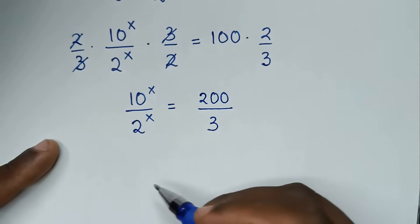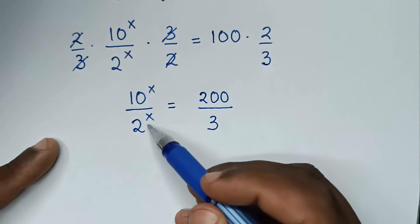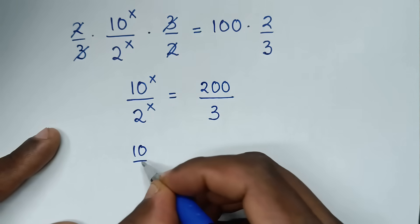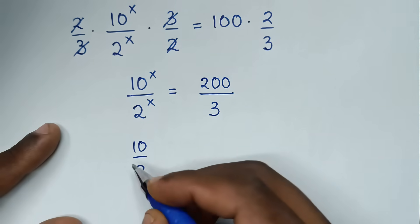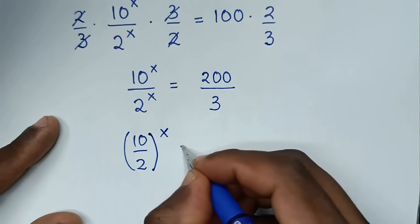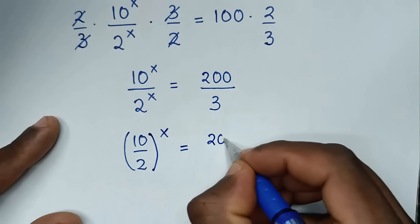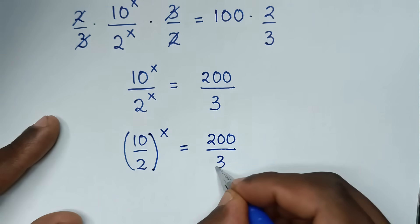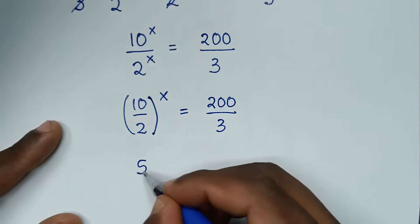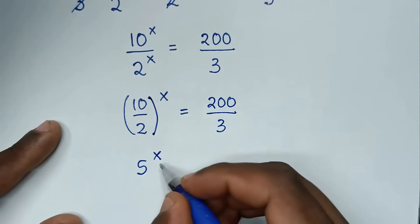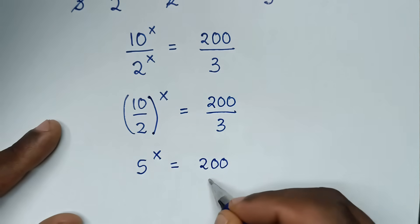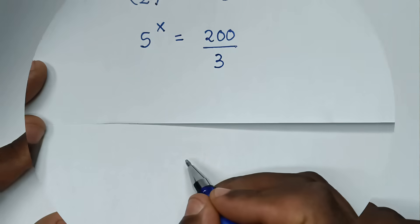Then in the next step, since we have the same power of x, it will be 10 over 2, bracket, to the power of x, is equal to 200 over 3. Then 10 divided by 2 is 5, so 5 power of x is equal to 200 over 3.